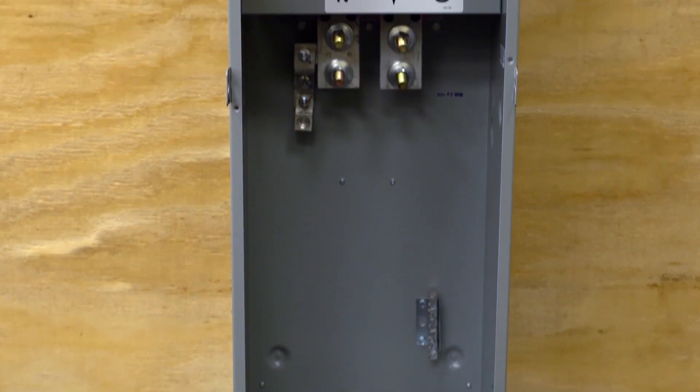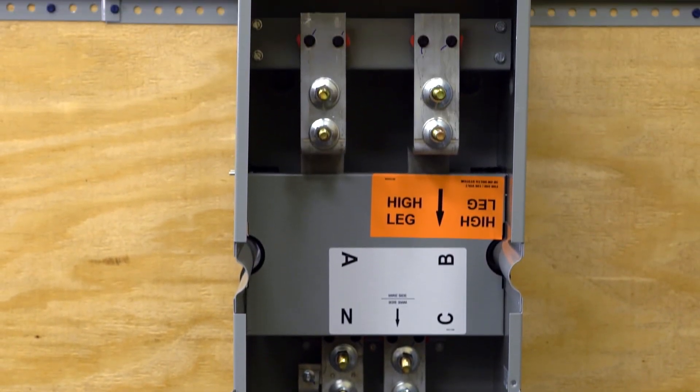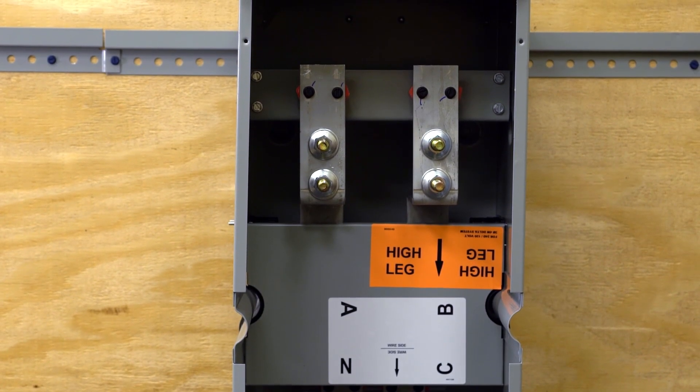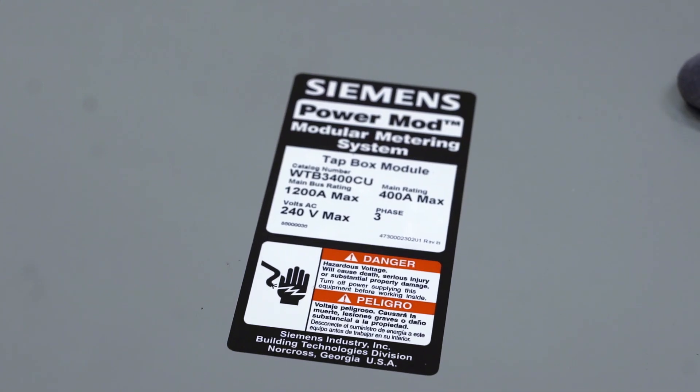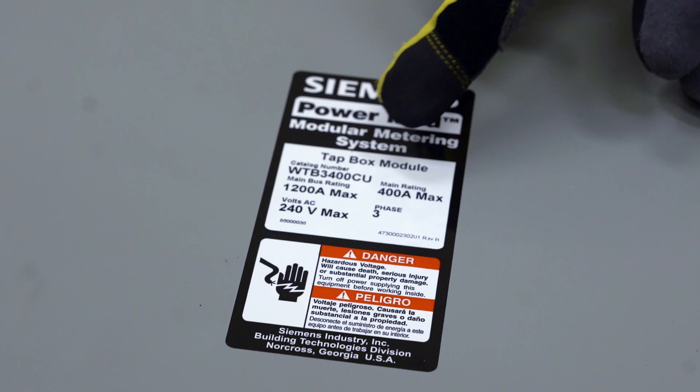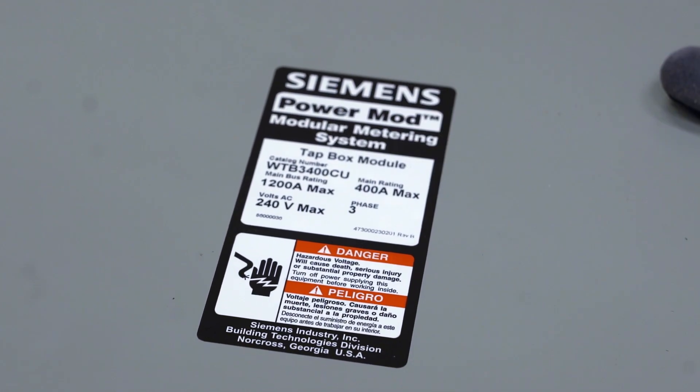If you're unsure from which direction you'll be feeding your mains or tap boxes, it is best to use combination feed modules so that you can make that decision in the field. The C and CU suffixes in the catalog number indicate that unit can be fed from overhead or underground.